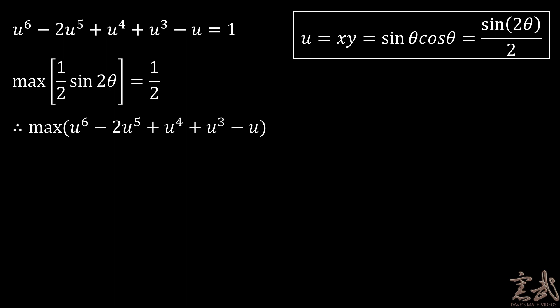Therefore, the maximum value of u to the sixth minus 2u to the fifth plus u to the fourth plus u to the third minus u is equal to 1 half to the sixth minus 2 times 1 half to the fifth plus 1 half to the fourth plus 1 half to the third minus 1 half. And when all of this is added up, it turns out to be 49 over 64.